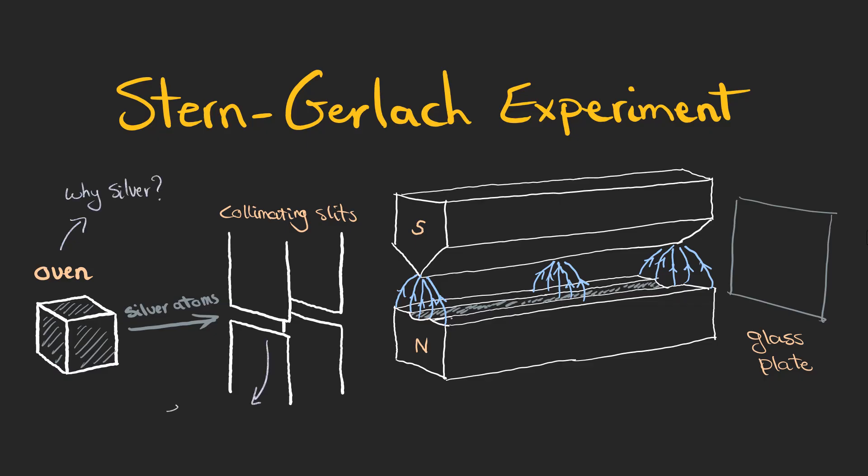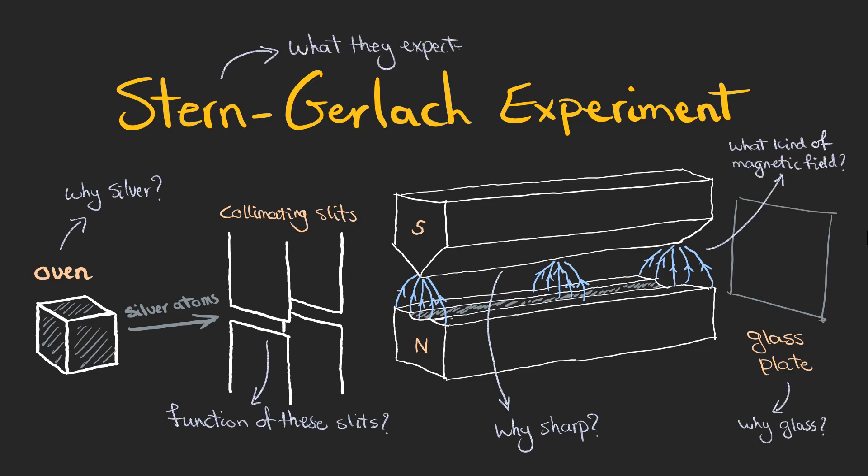Before we dive into the surprising results of this experiment, let's take a moment to understand its key components. What made this setup so special? Why did they choose silver atoms? Why was the magnet designed in such a unique way and what kind of magnetic field did it produce? Most importantly, how did the results of this experiment completely shock the physicists of that time and challenge everything they thought they knew about the atomic world?